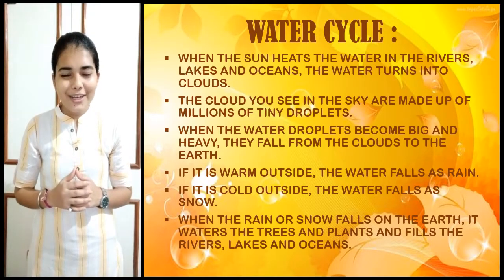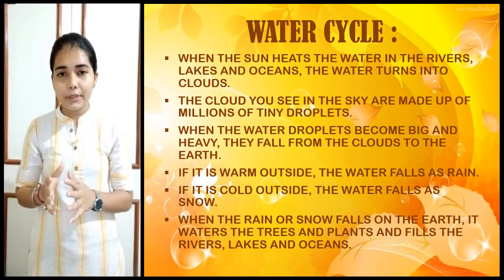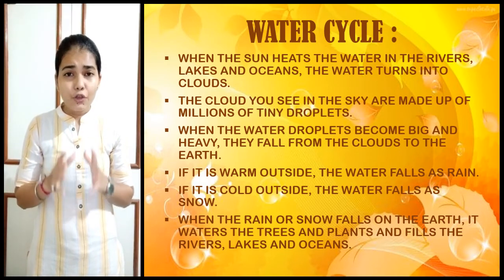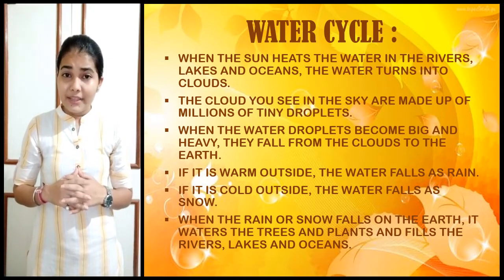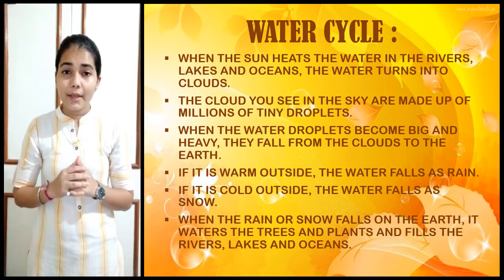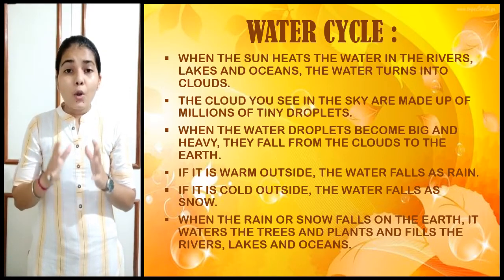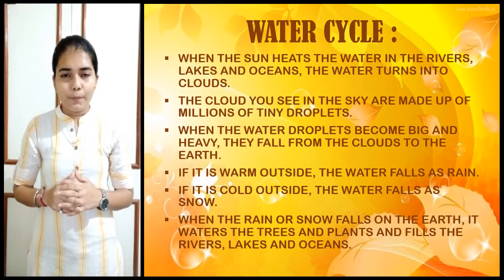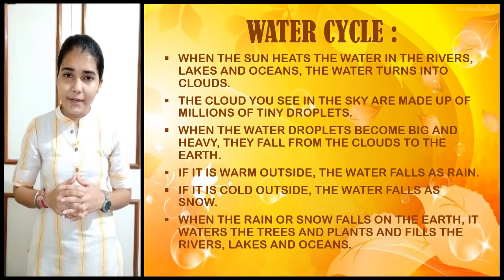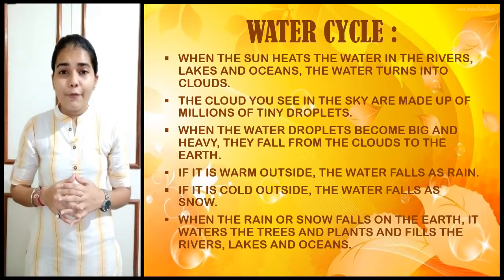Have you ever wondered how does it rain? When the sun hits the water in the rivers, lakes, and oceans, the water turns into cloud. The clouds you see are actually made up of millions of tiny droplets. When these tiny droplets become big and heavy, they fall down from the cloud to the earth. If it is warm outside, then the water falls as rain. If it is cold outside, the water falls as snow. When the rain or snow falls on the earth, it waters the trees and plants and also fills up the rivers, lakes, and oceans. In this way, we get fresh water from the rainwater.